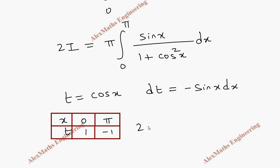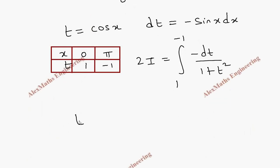So our integral, 2i becomes integral 1 to minus 1. Then this numerator will become minus dt because dt is minus sin x dx. So minus dt by 1 plus t square. 1 by 1 plus t square is tan inverse t.